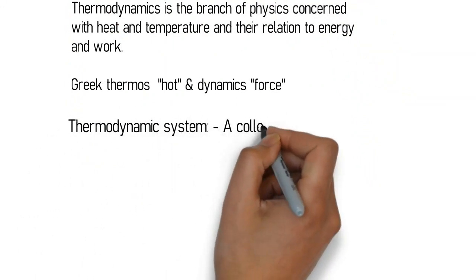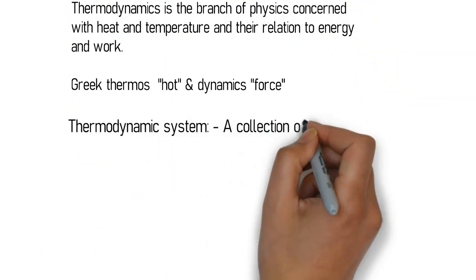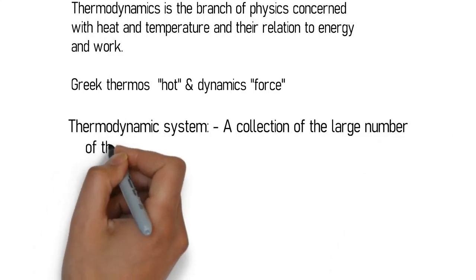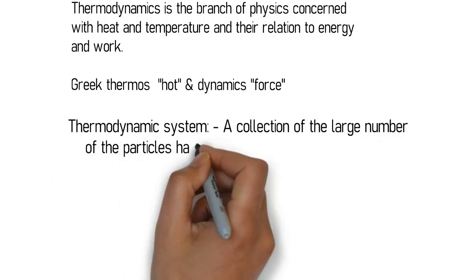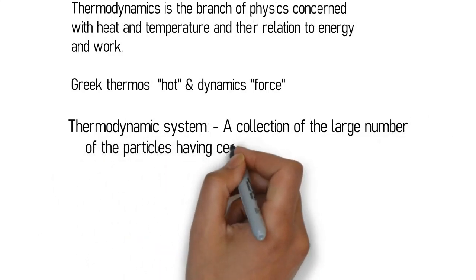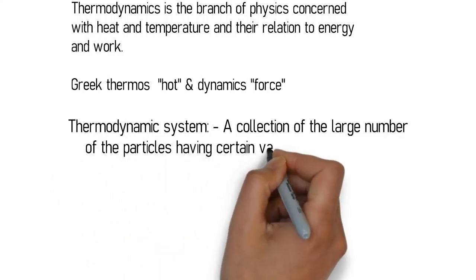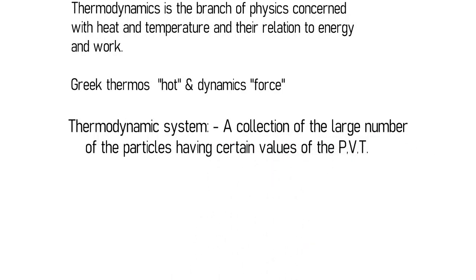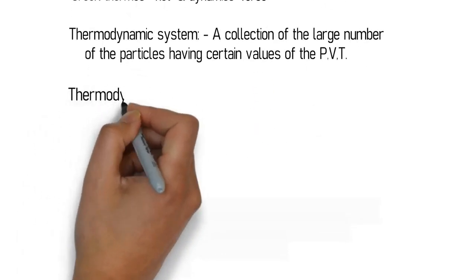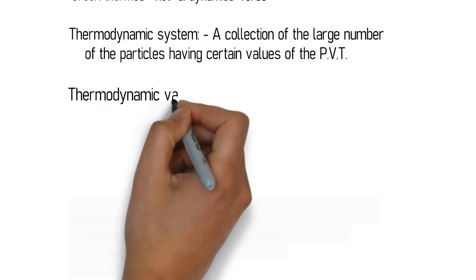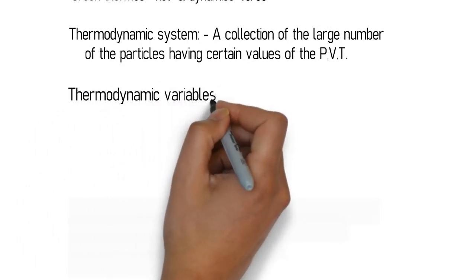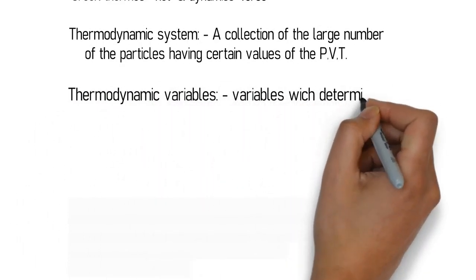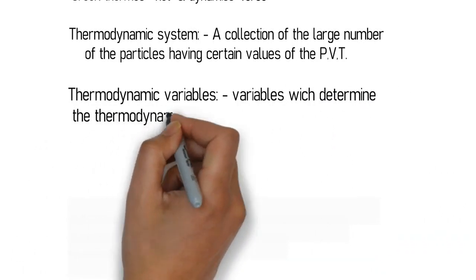What is a thermodynamic system? A collection of a large number of particles having certain values of pressure, volume, and temperature is known as a thermodynamic system. A thermodynamic system is a part of the universe which is under observation, and except for the system, everything else is the surroundings.